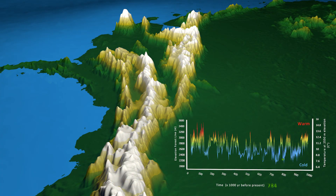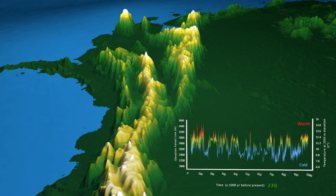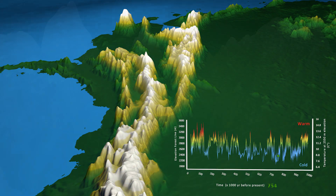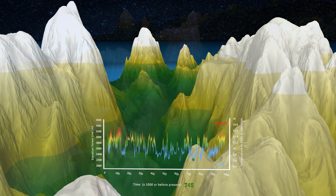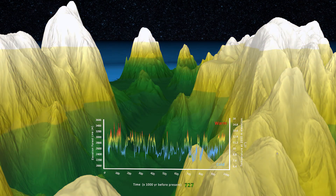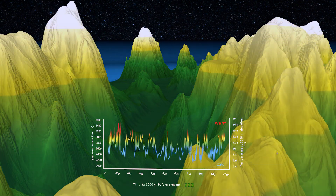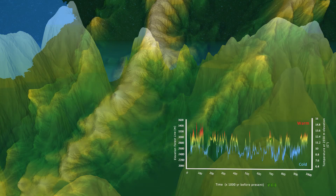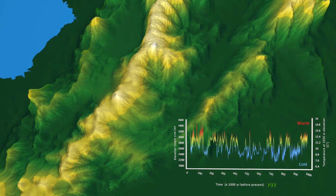But when climate cooled, the paramo moved downslope and the topography of the mountain offered much more space for connections. Interestingly, these cold and warm conditions were distributed unevenly in time. Scientists discovered that during the last 2 million years,